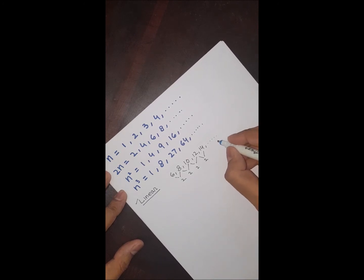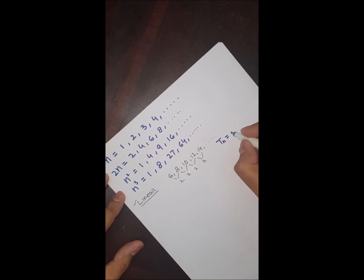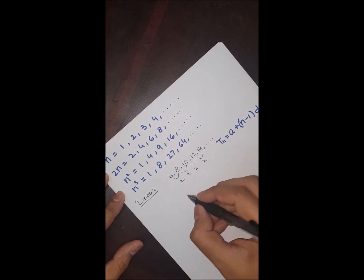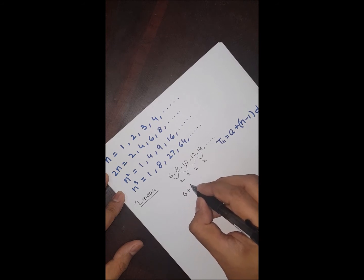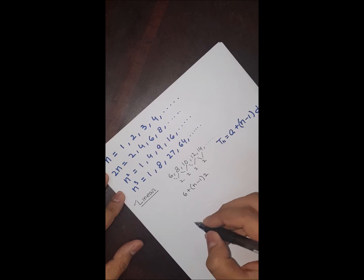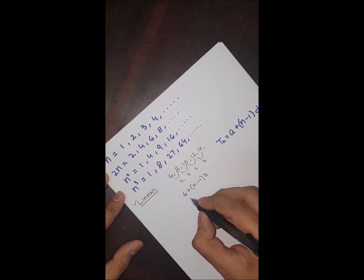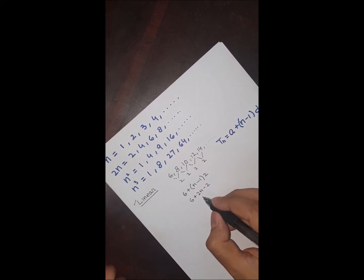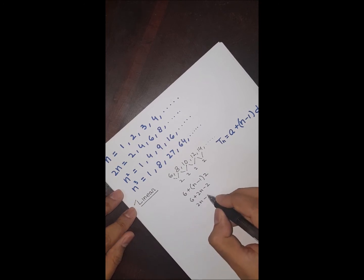Since the difference is constant, this is a linear or arithmetic sequence. We will use the formula for the nth term: tn = a + (n − 1) × d, where a is the first term, which is 6, and d is the common difference, which is 2. So it becomes 6 + (n − 1) × 2. Simplifying: 6 + 2n − 2, giving us 2n + 4.